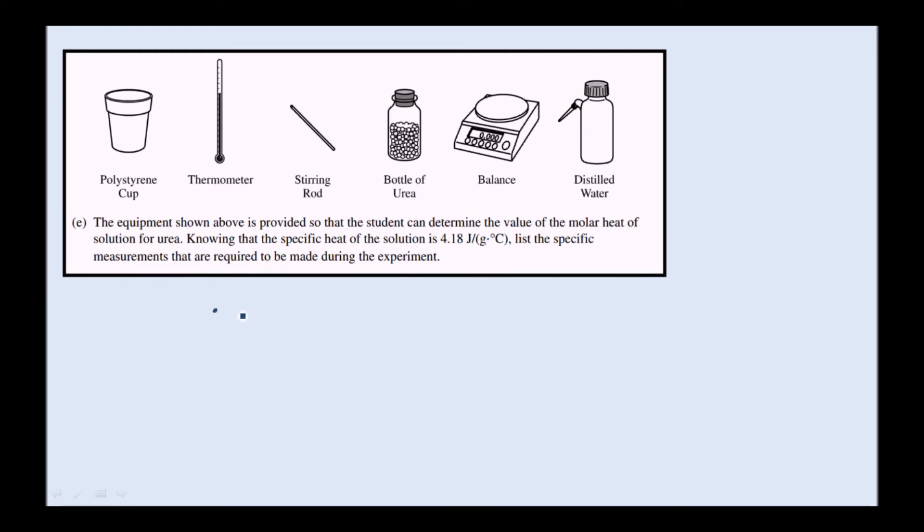First, we need the mass of water, because the temperature change would be different if we have a teaspoon of water or a gallon of water. The temperature change is going to be very different depending on how much water we have. Likewise, we need the mass of urea. Same argument: temperature change is related to how much urea is being dissolved and how much water we have.